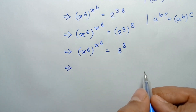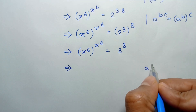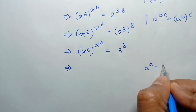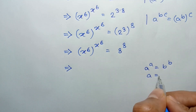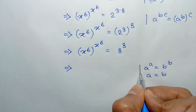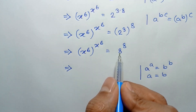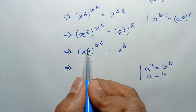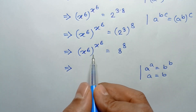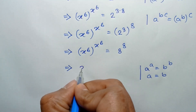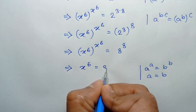According to the formula, when a to the power a is equal to b to the power b, then a is equal to b. Comparing, with x to the power 6 as a and 8 as b, since a to the power a equals b to the power b, we can write x to the power 6 is equal to 8.